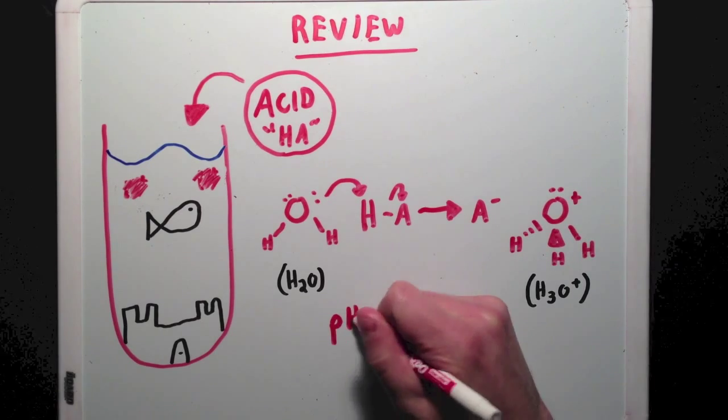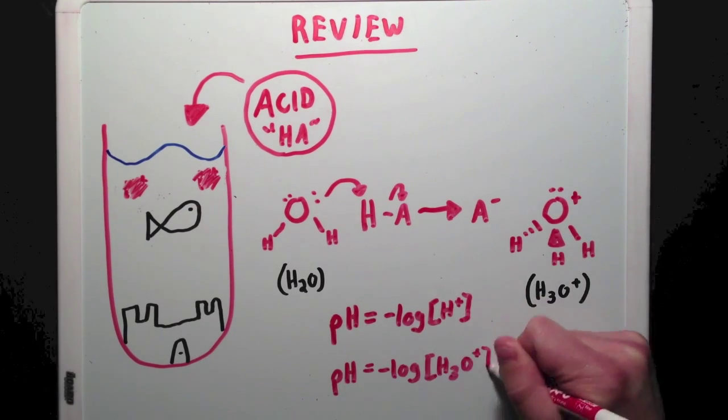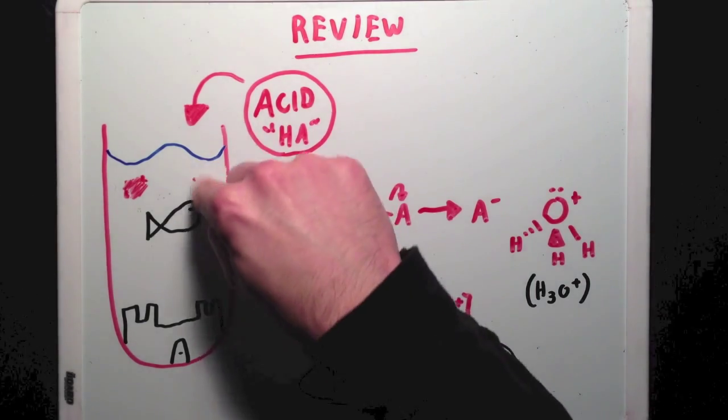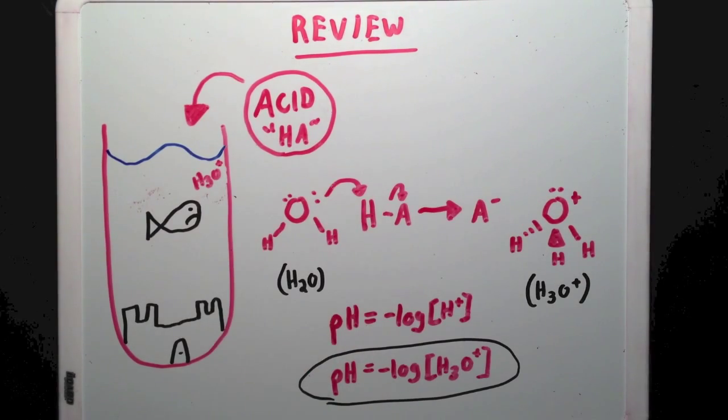In fact, the proton concentration in the pH equation is actually shorthand for the hydronium concentration, which means that it will be hydronium ions floating around in the fishbowl.